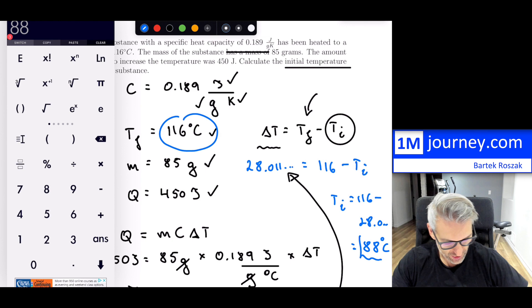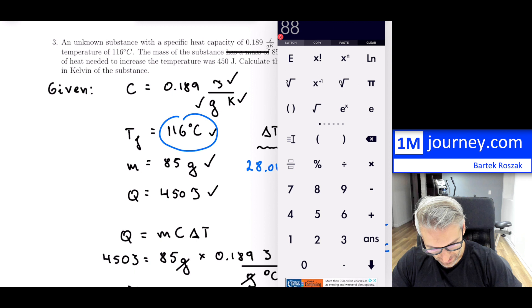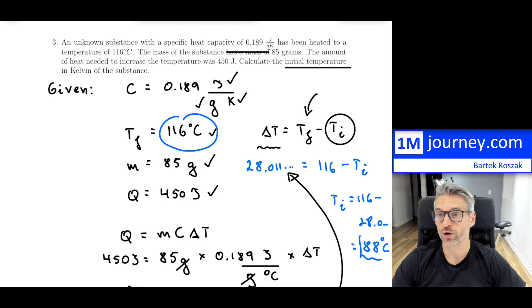So there you have it — that's another example with regards to specific heat capacity within a state. We didn't need to know what the substance was; it doesn't matter to us.